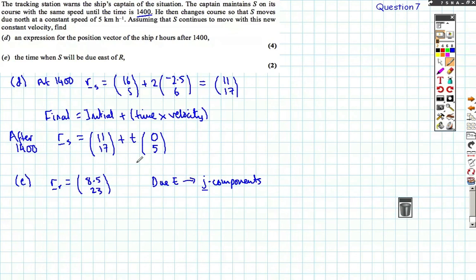So we do have to create an expression. If we look along the j components for the ship, that's 17 plus 5t, is going to be the same as the j component, 23 there. So rearranging this, 5t equals 6, or t equals 1.2. So 1.2 hours, which actually gives us 1 hour 12 minutes, so a fifth, or 0.2 of an hour is 12 minutes, which is 1 hour 12 mins, which is at 1 hour after the 2 o'clock, which is at 15:12 in the 24 hour clock. So the due east is when we're going to have the vertical components of these things that are going to be the same.